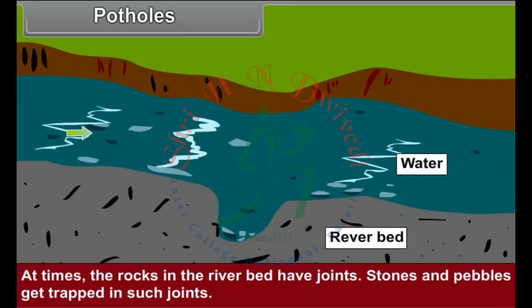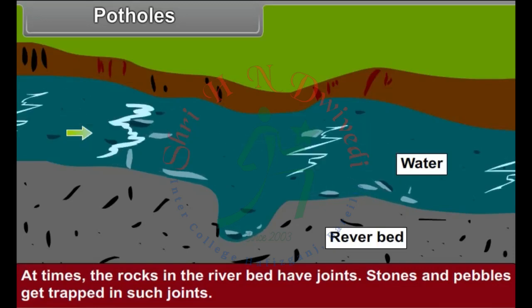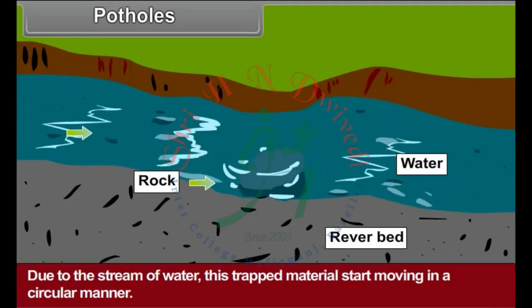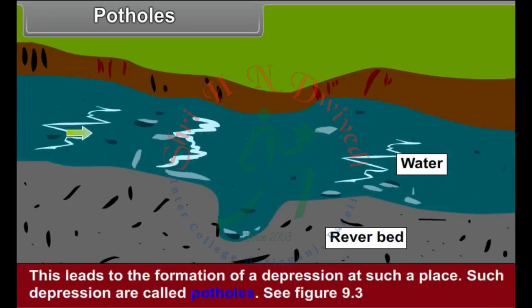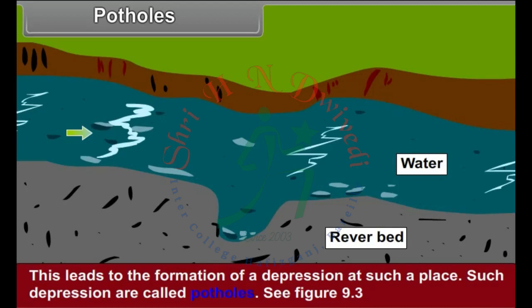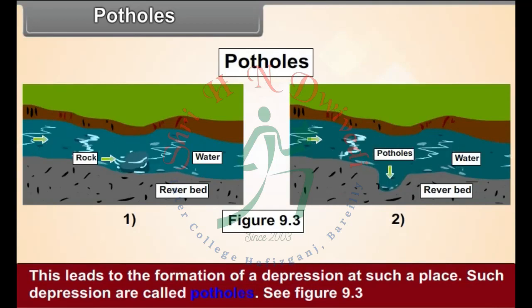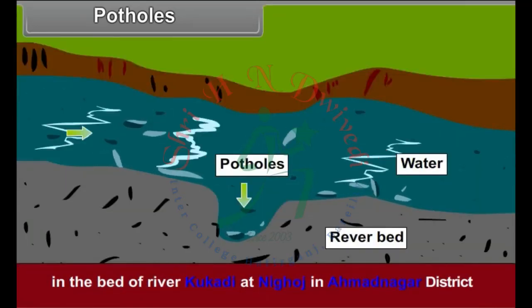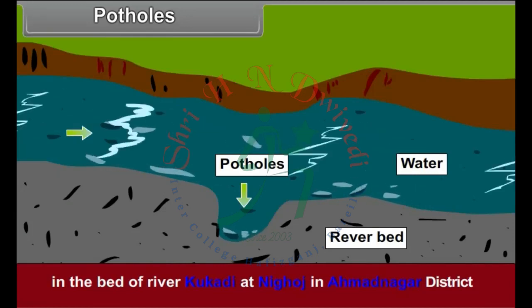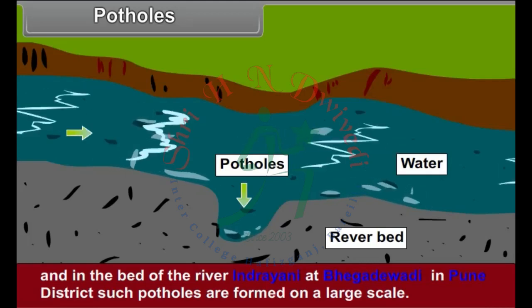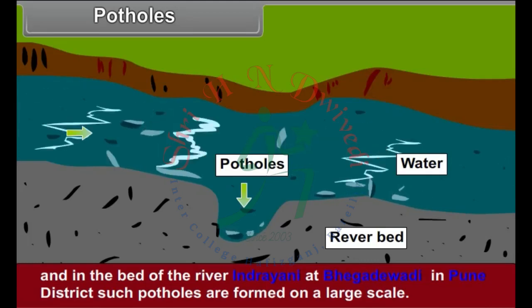Potholes: At times, the rocks in the river bed have joints. Stones and pebbles get trapped in such joints. Due to the stream of water, this trapped material starts moving in a circular manner. This leads to the formation of a depression at such places. Such depressions are called potholes. See figure 9.3. In the bed of river Kukdi at Nikos in Ahmednagar district and in the bed of river Indrayani at Begadewadi in Pune district, such potholes are formed on a large scale.